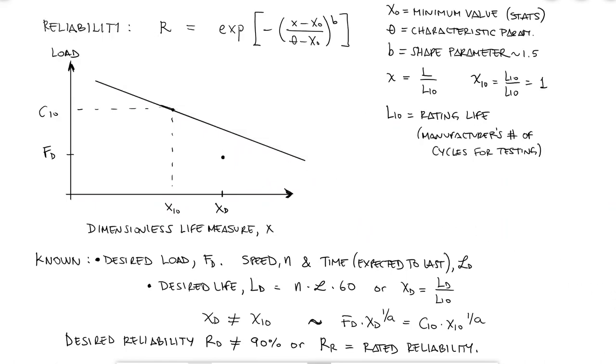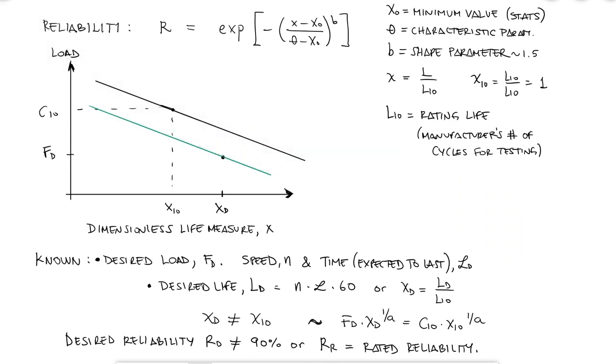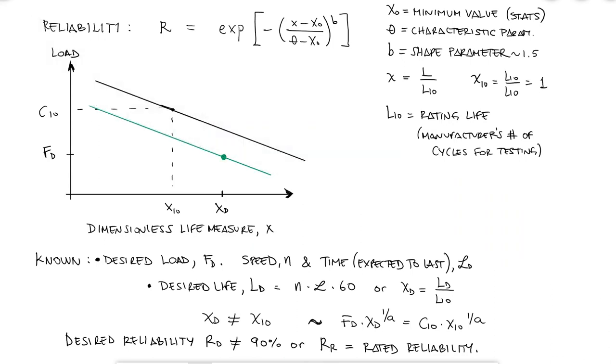And I know that my line, which is a higher reliability value, is to the left of the rated line because of the analysis we covered earlier.